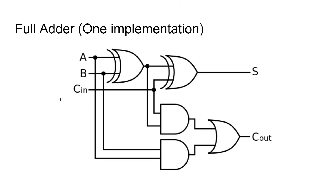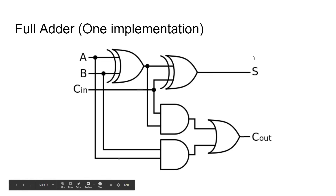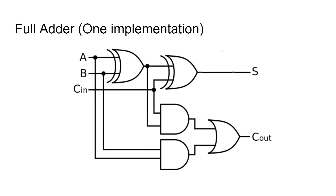This is what the full adder looks like. It's not terribly complex. You've got three inputs: two digits (number one and number two) and the carry-in from the previous digit's addition. The sum goes to the output, and the carry goes on to the next full adder.